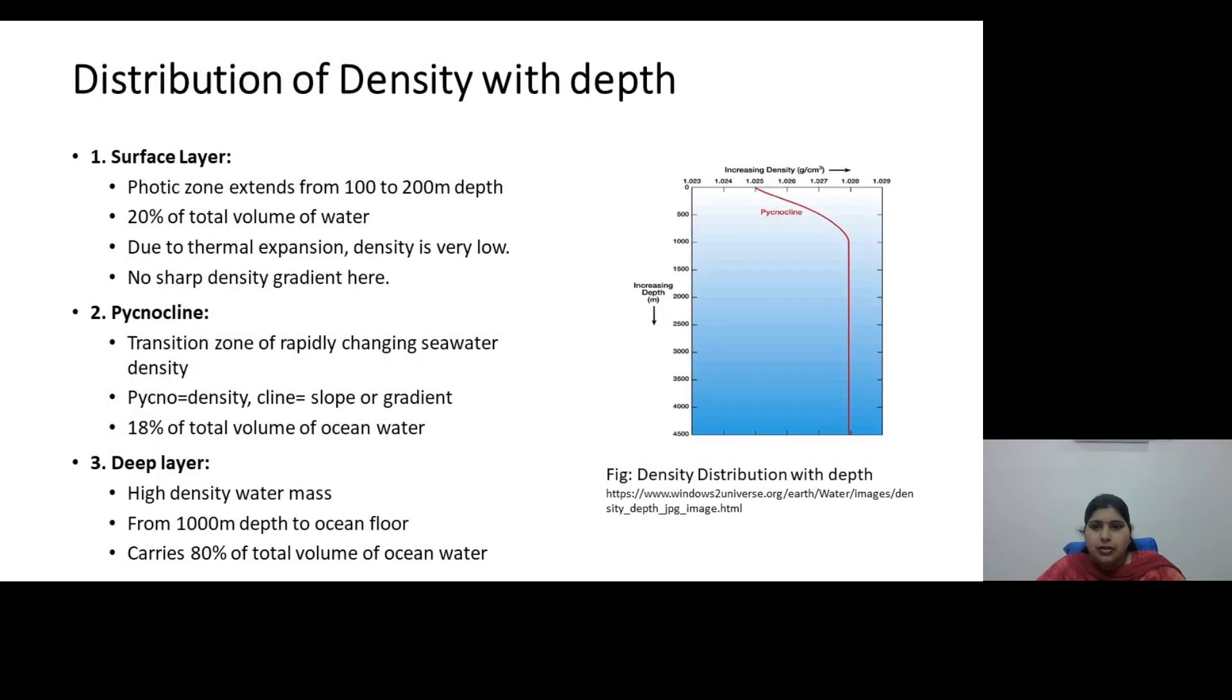So students, let's have a look at this figure where you can see the distribution of density with depth. So what we have seen in this is that we have three layers. The top 100 to 200 meters is the surface layer. Beyond that we have a rapid slope or gradient in density that is pycnocline and after that we have the bottom layer. This surface layer is basically the photic zone till where the sunlight can penetrate. So that is why we say that this is still 200 meter of depth and this surface layer comprises about 20% of the total volume of ocean water. Due to thermal expansion since the sunlight reaches here the density is very low and it is a very light layer compared to rest of the ocean water. And we cannot see any sharp gradient in density in this layer.